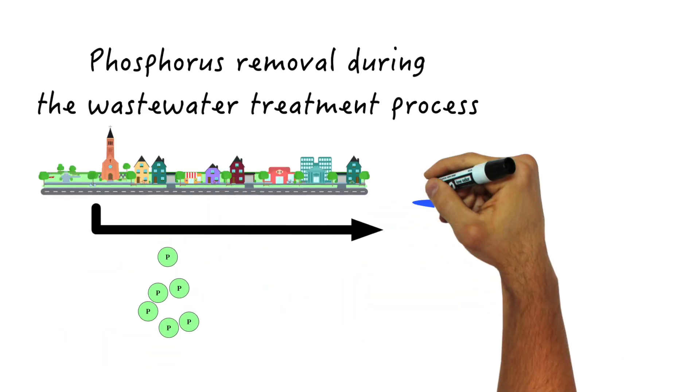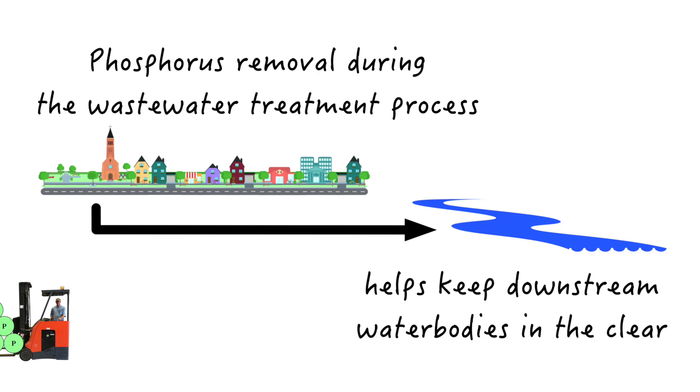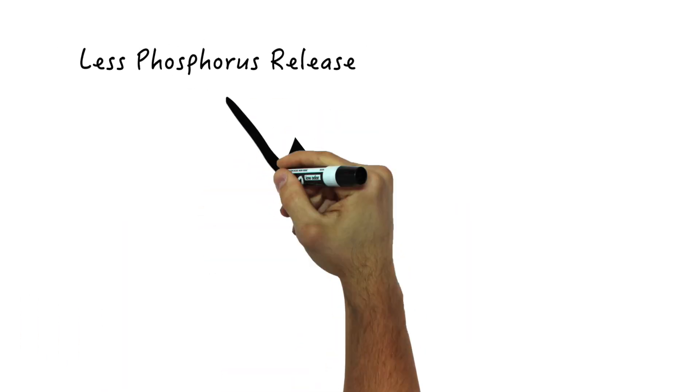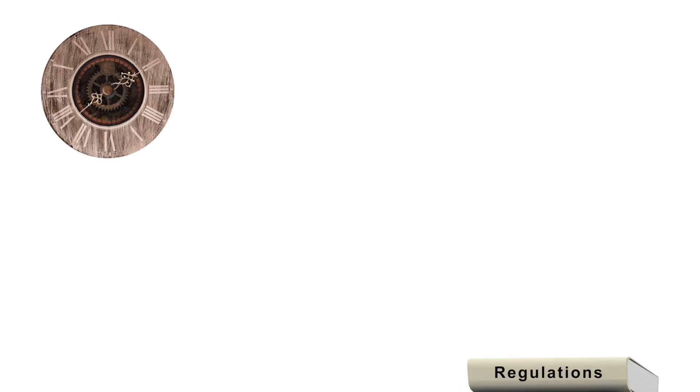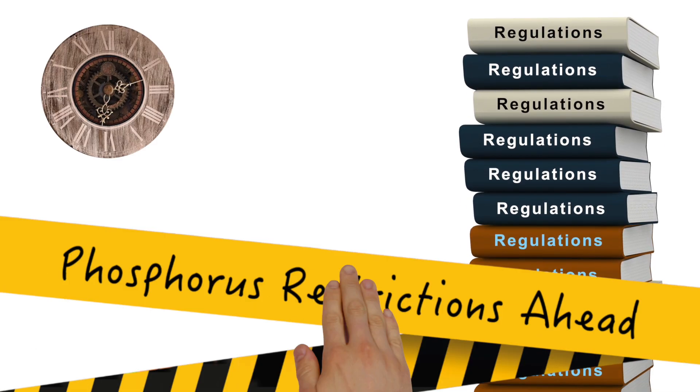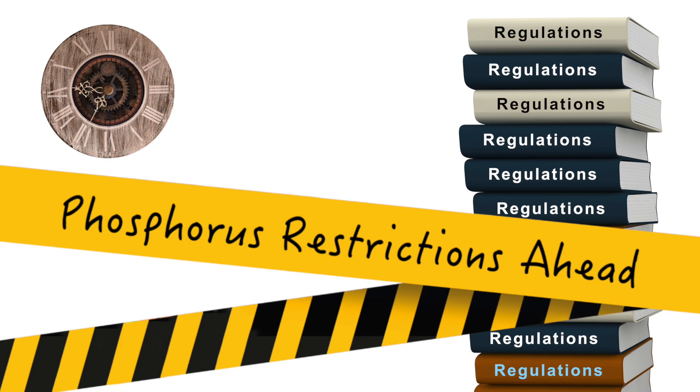By removing phosphorus during the wastewater treatment process, there are less potential downstream negative impacts. Less phosphorus release, less negative environmental impact. And as time moves on, phosphorus discharge limits for lagoons will only become more strict, increasing the urgency for a reliable and effective phosphorus removal strategy.